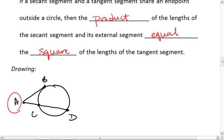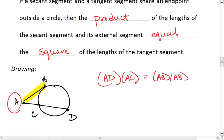What this is saying is that, again, we're going to take our entire secant times the part of the secant that's outside of the circle. So we get AD times AC. This value here is going to equal our tangent segment times itself. So this will equal AB times AB, or we can write this as AB squared.